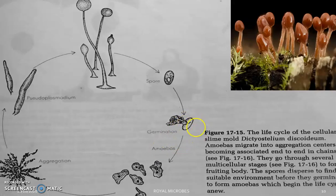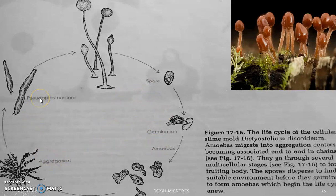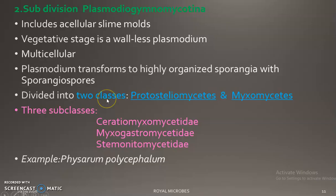Two subclasses are Acrasiomycetidae and Dictyosteliomycetidae. An example is Dictyostelium discoideum. The life cycle of Dictyostelium discoideum shows different stages — the amoeba stage can be seen, followed by aggregation of amoebae resulting in the formation of the fruiting body.